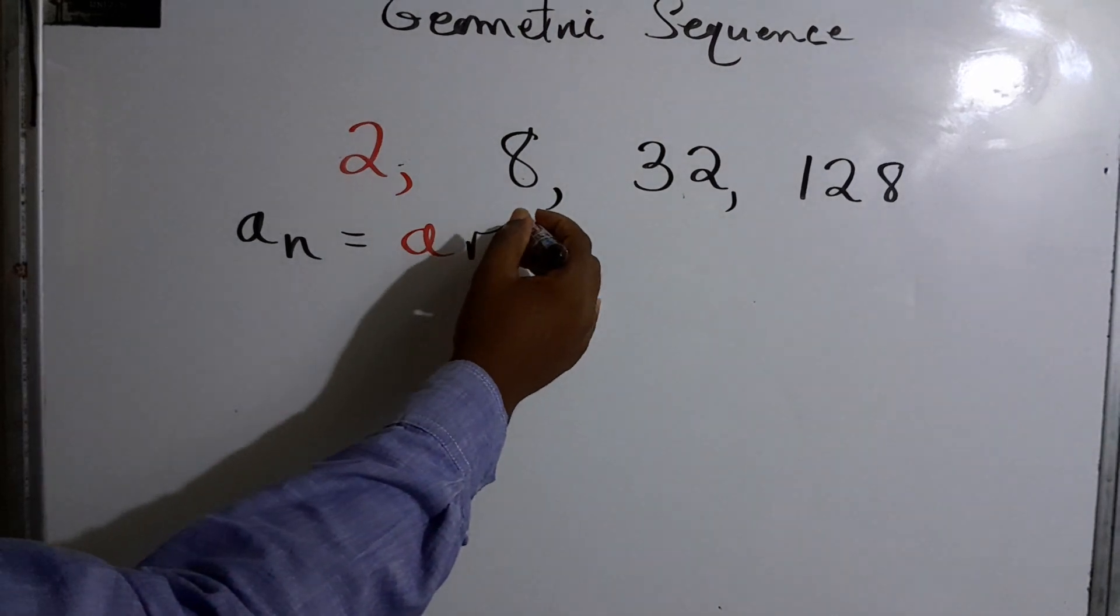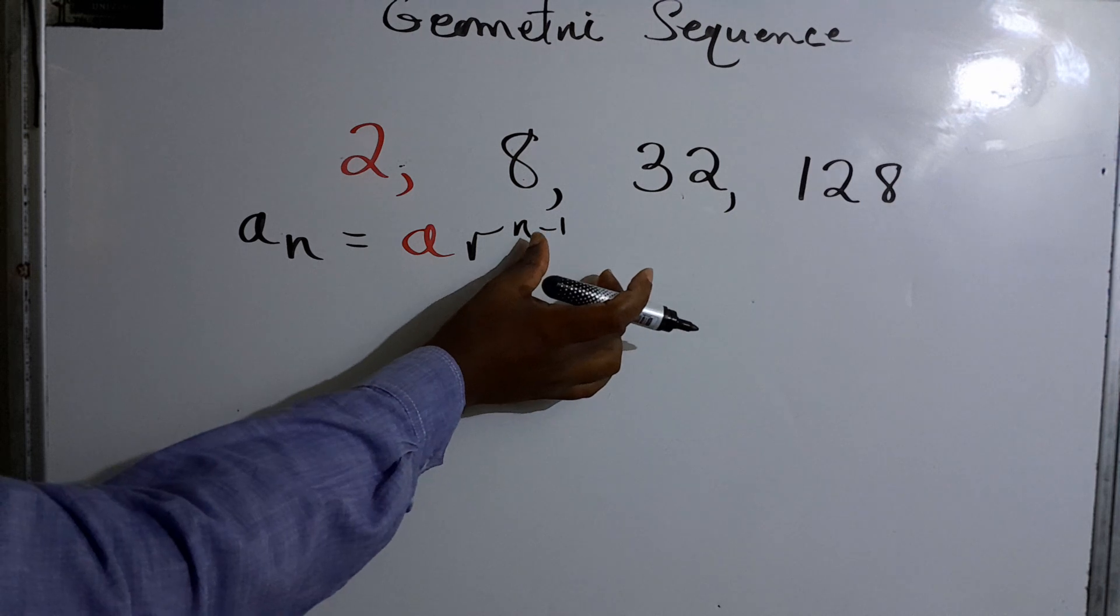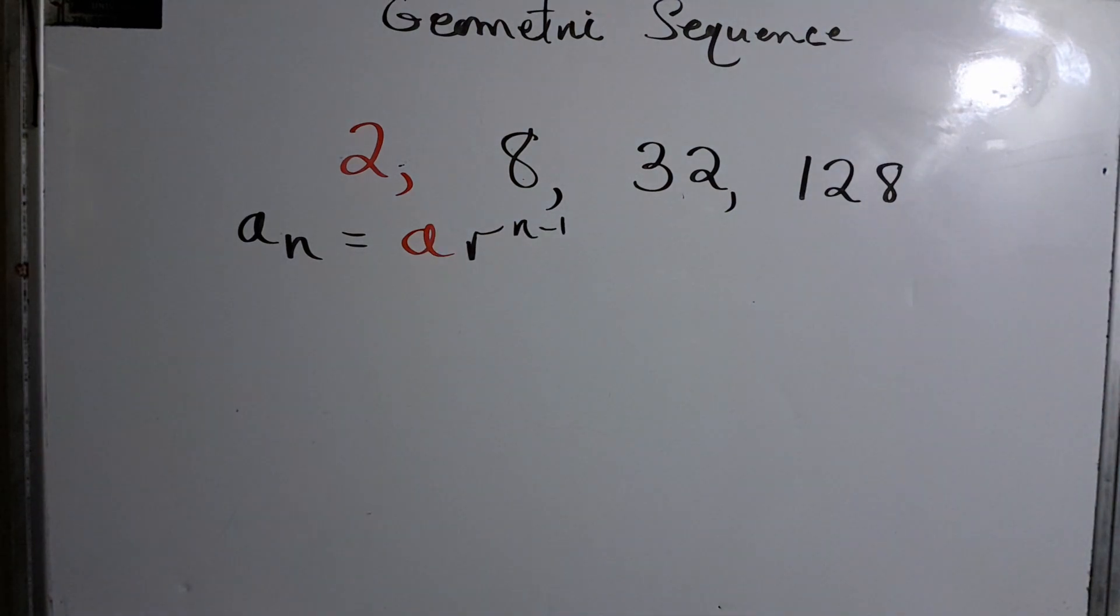And then we have, of course, n minus one, and n minus one represents the term that we're looking for. So let us put things in perspective. This is just the formula.